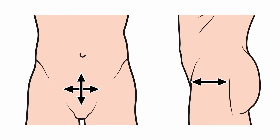In this example, we're measuring cranial to caudal and lateral to lateral on the left image, and anterior to posterior on the right. We could easily do lateral to lateral on the left image and anterior to posterior and cranial to caudal on the right image. Just make sure you are measuring all three measurements separately and not duplicating one measurement in two different planes.